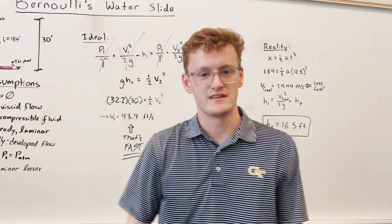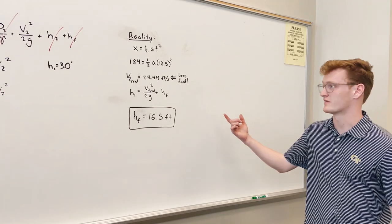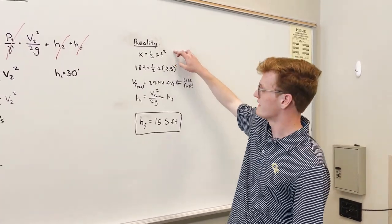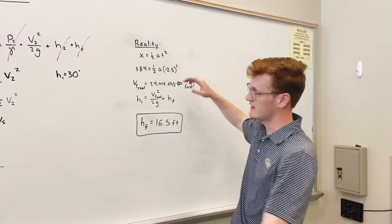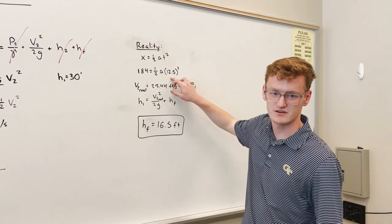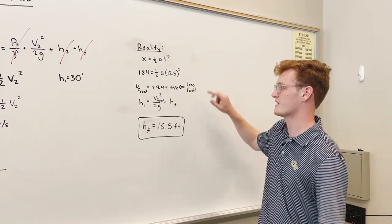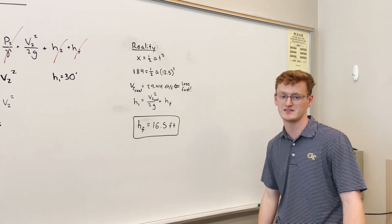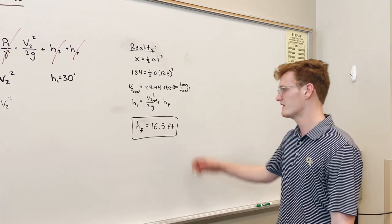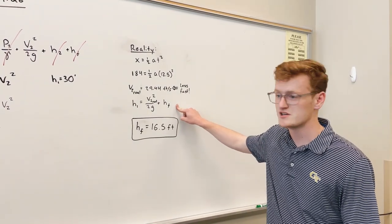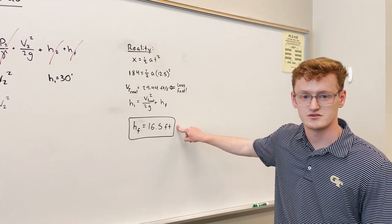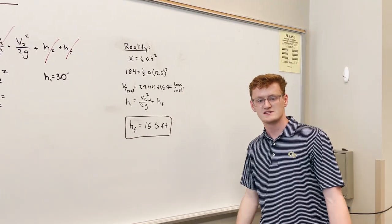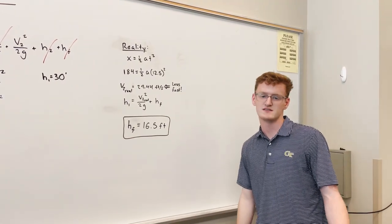Too bad it wasn't really that fast, though. Here's the real case. Using basic motion equations and plugging in the length of the slide and the time it took him to get to the bottom, Louis was traveling 29.44 feet per second when he hit the water. Plugging that into our Bernoulli equation, we found a head loss due to friction of 16.5 feet. CRC, do better — we need ideal slides.